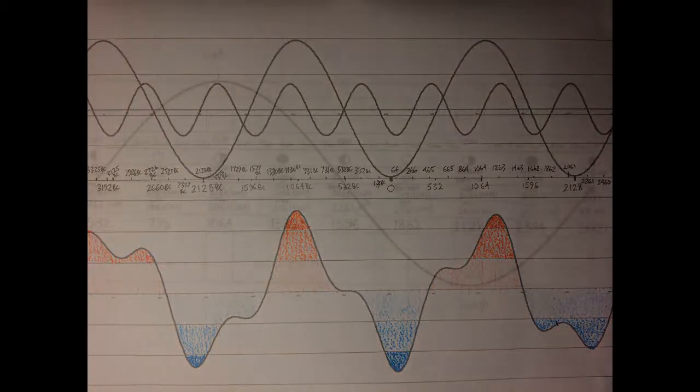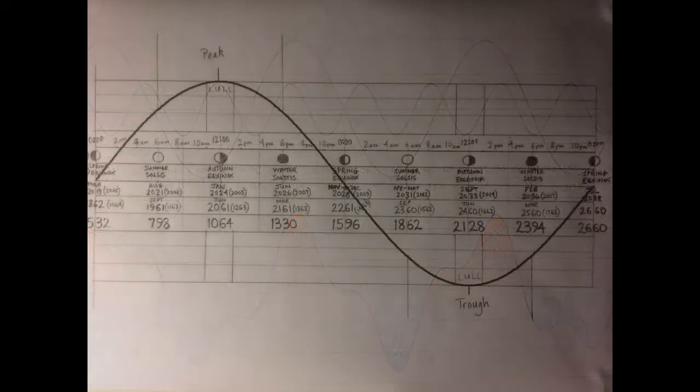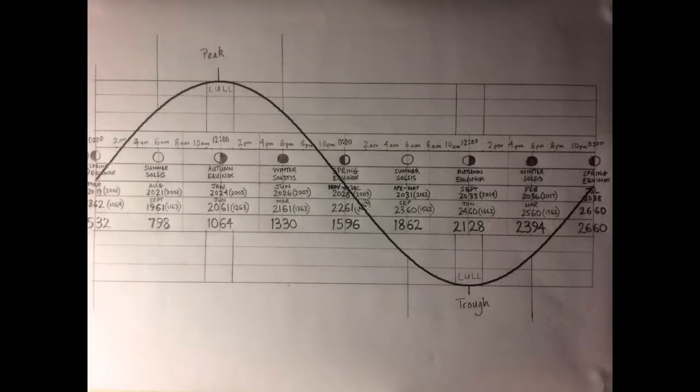But the Earth is still getting cooler from its previous expansion period. So the Sun and the Earth have gotten into this relationship because it's been ongoing. The Earth will always be cooling down from a previous expansion period. So even though the Sun is getting hotter, the Earth is still getting cooler.